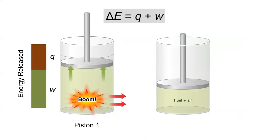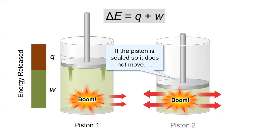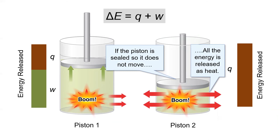Going back to our piston example, let's imagine we've sealed the piston so that it cannot move. This system can no longer do work, so all of the energy released is as heat. This process would create more heat this time when the piston is sealed than if the piston were allowed to move. But please do not test this at home.